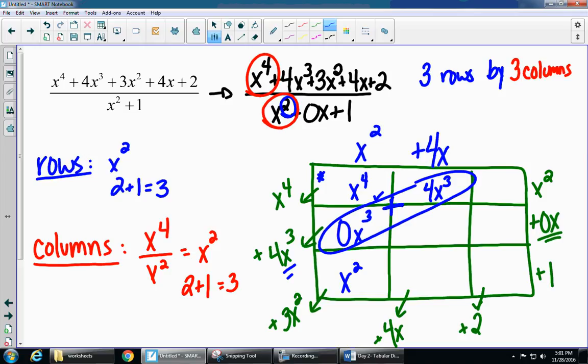As soon as you get a top piece, you're going to multiply. 4x times x squared, 4x to the third. We have that. 4x times 0x. Remember, anything times 0 is 0. And then lastly, 4x times 1 is 4x.